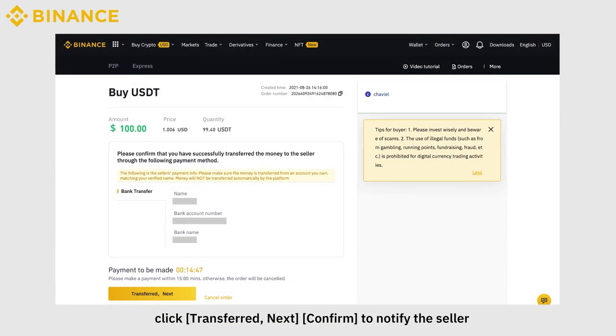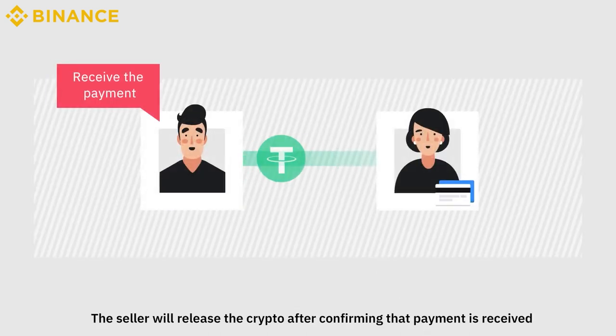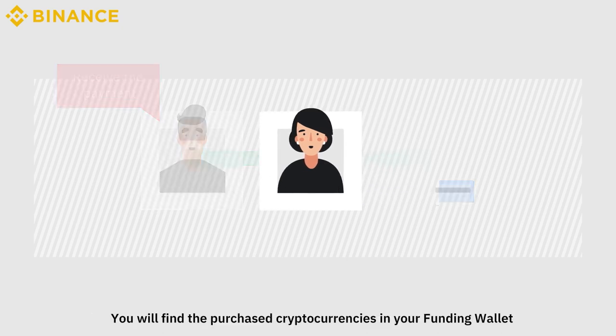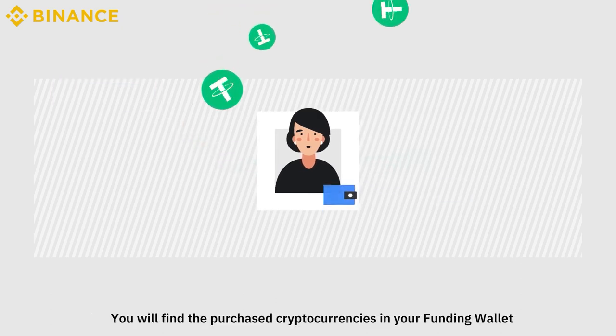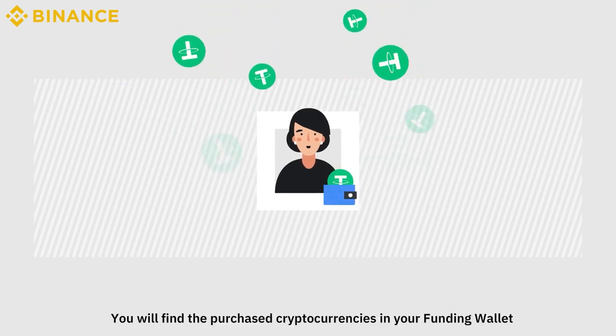Once payment is made, click Transferred, then Next, and confirm to notify the seller. The seller will release the crypto after confirming that payment is received. You will find the purchased cryptocurrencies in your funding wallet.